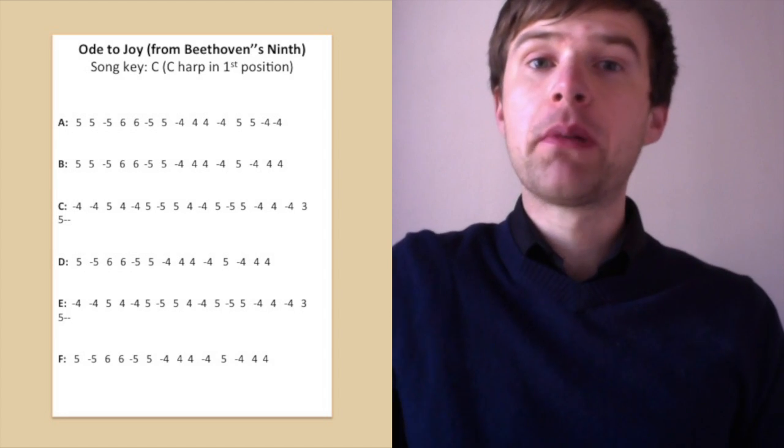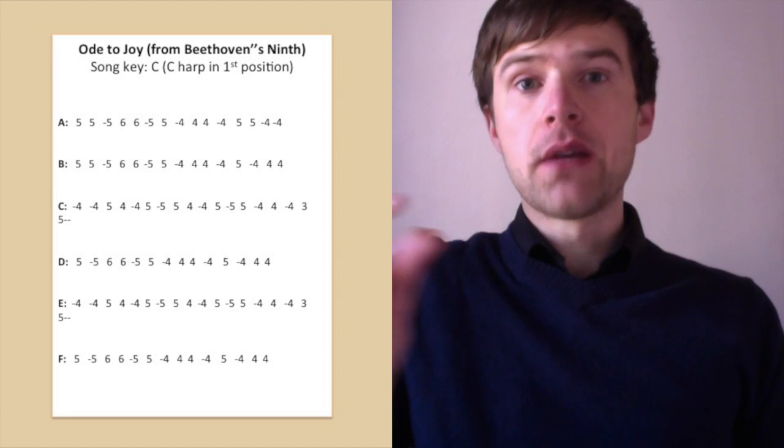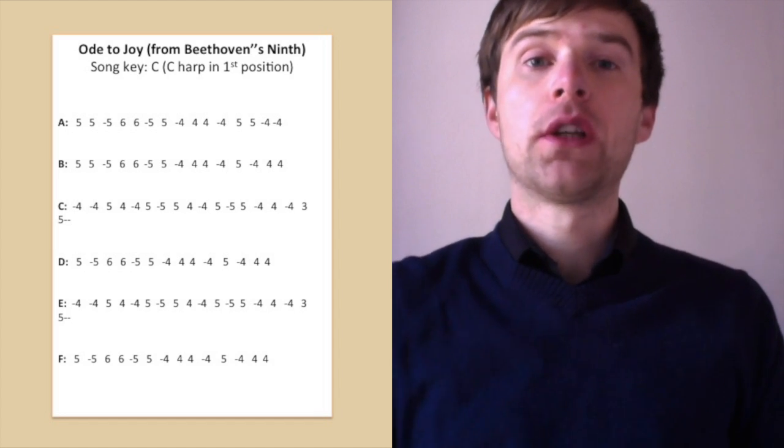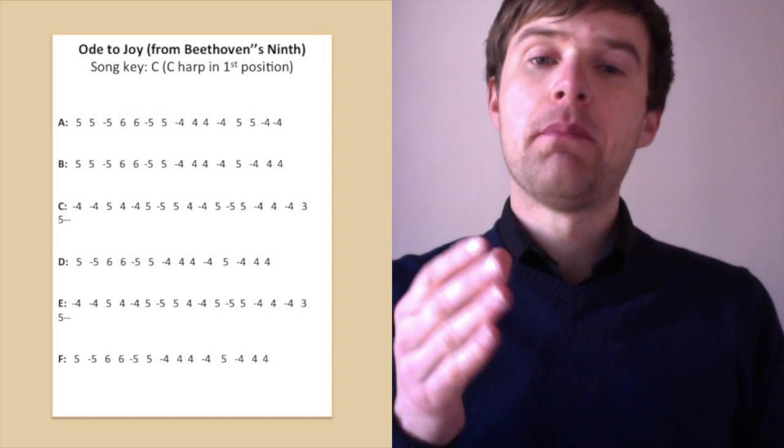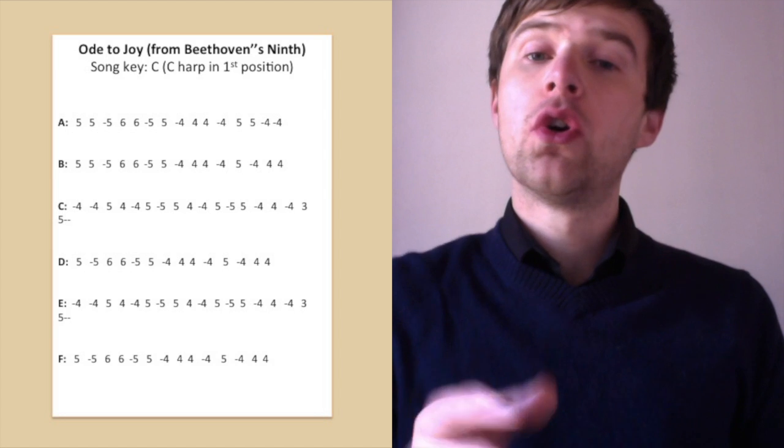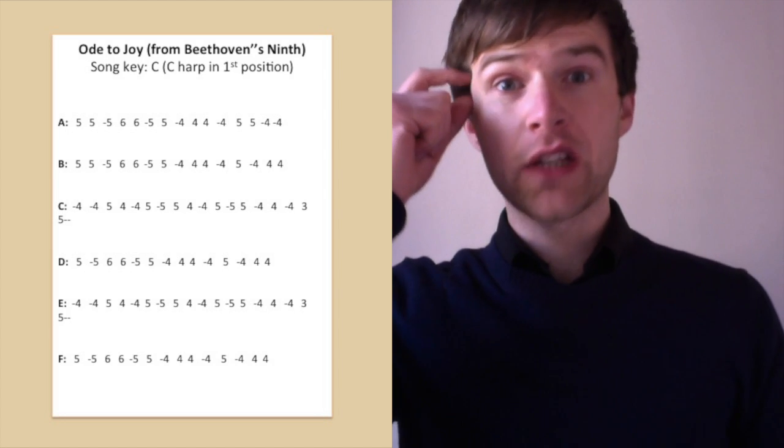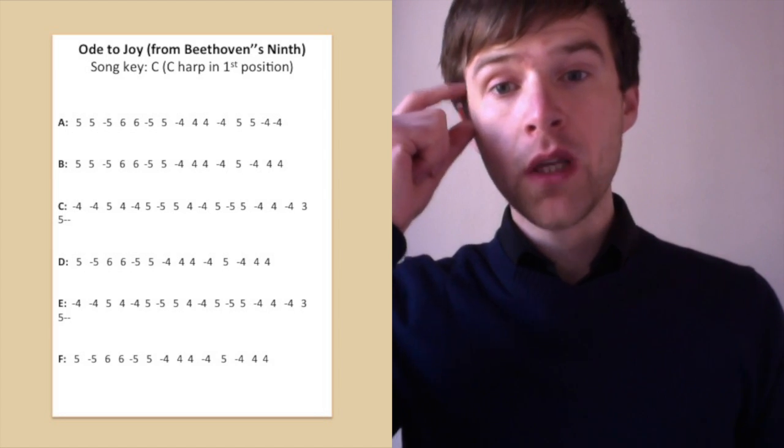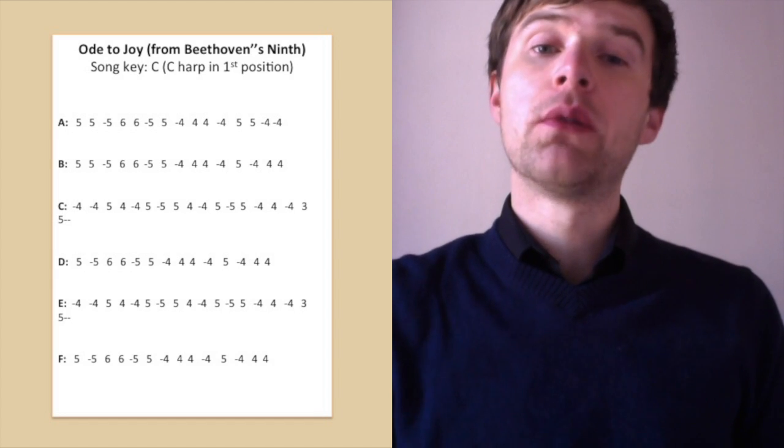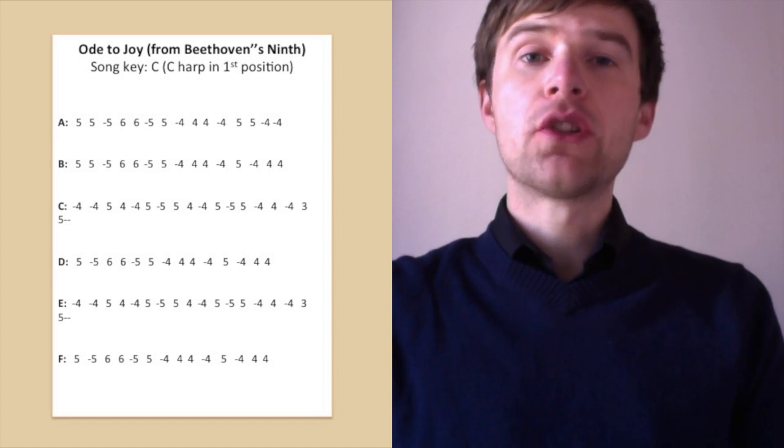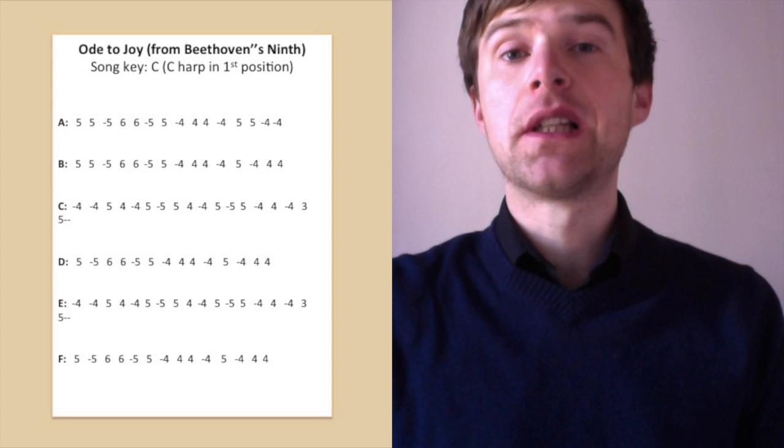I'm actually keeping on blowing or breathing out as I move up the harmonica. So I didn't miss out hole four, although it's not written in the tab. You don't have to do that. That's just an option there if you want to. But that five blow comes on quite quickly after the three blow. I'll just play it again so you can hear how it sounds. This is line C.